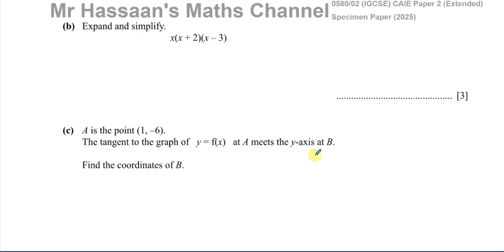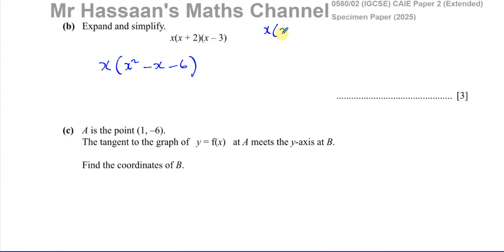Part B says: expand and simplify x(x+2)(x-3). First expand (x+2)(x-3): you get x squared, then the middle term is the sum of 2 and -3, which is -x, and the constant term is the product, which is -6. So (x+2)(x-3) = x² - x - 6. Now expanding x times (x² - x - 6): x times x² is x³, x times -x is -x², x times -6 is -6x. So the result is x³ - x² - 6x.